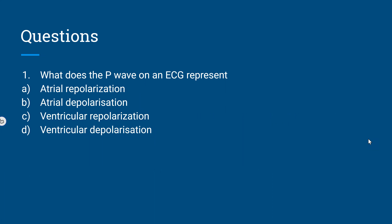MCQ question: What does the P-wave on the ECG represent? The options are: A) atrial repolarization, B) atrial depolarization, C) ventricular repolarization, D) ventricular depolarization.